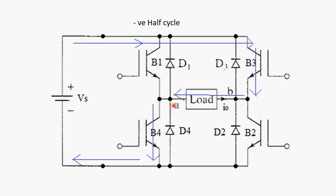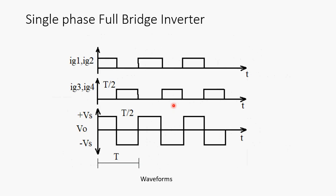Clearly, this can be seen. What we can say is, we are getting positive half cycle of the output during B1 and B2 turn on. And we get negative half cycle at the output during B3 and B4 turn on. Same can be drawn in the waveform.